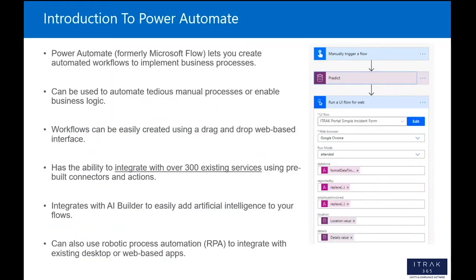Power Automate was formerly known as Microsoft Flow. It lets you create automated workflows to implement business processes — you can automate tedious manual processes or enable business logic. Workflows can be easily created using a drag-and-drop web-based interface. Power Automate also has the ability to integrate with over 300 existing services using pre-built connectors and actions. Popular connectors include Office 365 Outlook, OneDrive, SharePoint, Microsoft Teams, and RSS feeds. Some interesting ones include Lifex smart lights, Ethereum blockchain for smart contracts, and VirusTotal for scanning files for viruses.